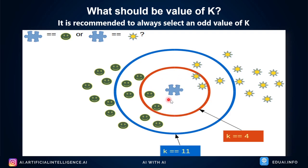Looking at the example where K equals 4, the new data point belongs to which class — smileys or suns? We see a tie here. Assigning an even number to K is not a good idea. It is always better to provide K as an odd number. If I provide K equal to 11, the circle expands further. It will decide what category the point belongs to. You can easily see there are more green smileys, so this data point will automatically become green smiley. This is how KNN actually works — it is that simple.